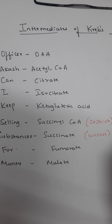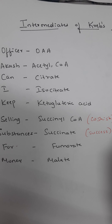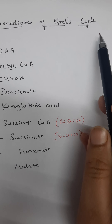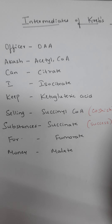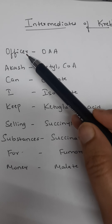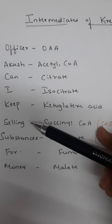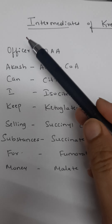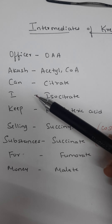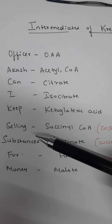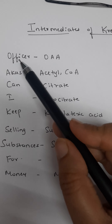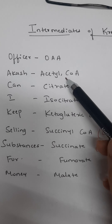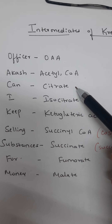Hello guys, welcome to my YouTube channel at Need Biology. I am here with you with the trick to remember intermediates of Krebs cycle. The trick is: 'Officer Akash Can I Keep Selling Substances For Money.' O is for oxaloacetic acid, A is for acetyl coenzyme A, C is for citrate.